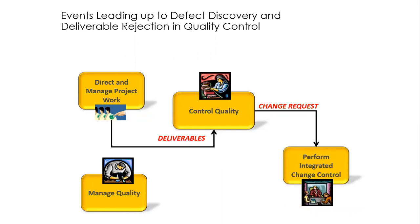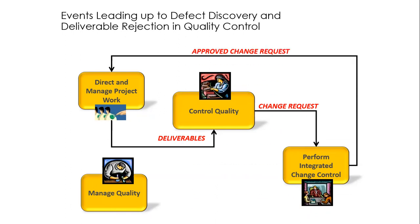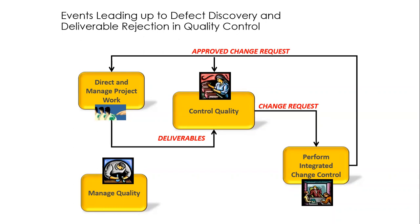The change control board — or it may not be a change control board; it might just be a sponsor or a project manager, because not every project needs a change control board. Assuming we do have a change control board in this example, they will review the change request and let's say they approve it. It gets put into a change log. The approved change request becomes an input back into direct and manage project work and also into control quality, so that on the next go round we will execute in direct and manage project work and check what we have produced in control quality, and hopefully this time it will fit the bill.